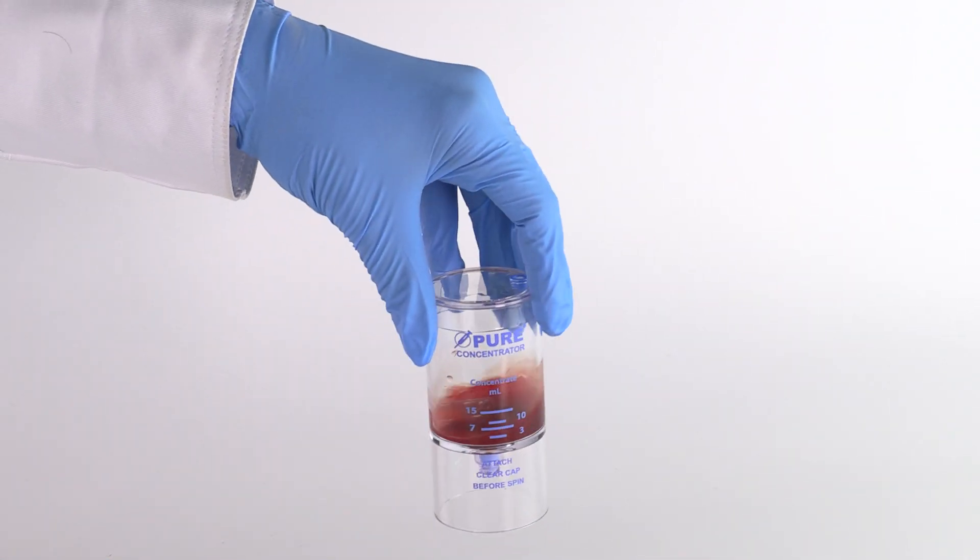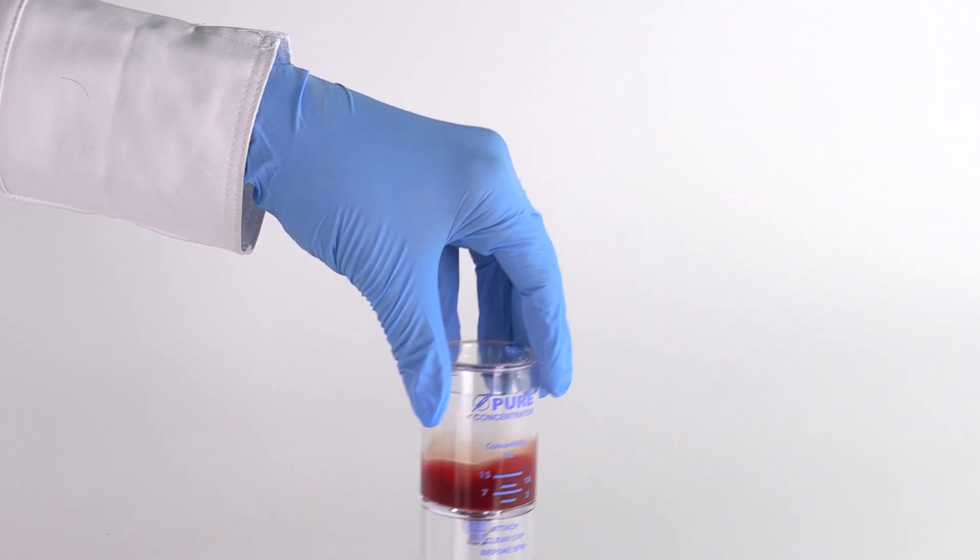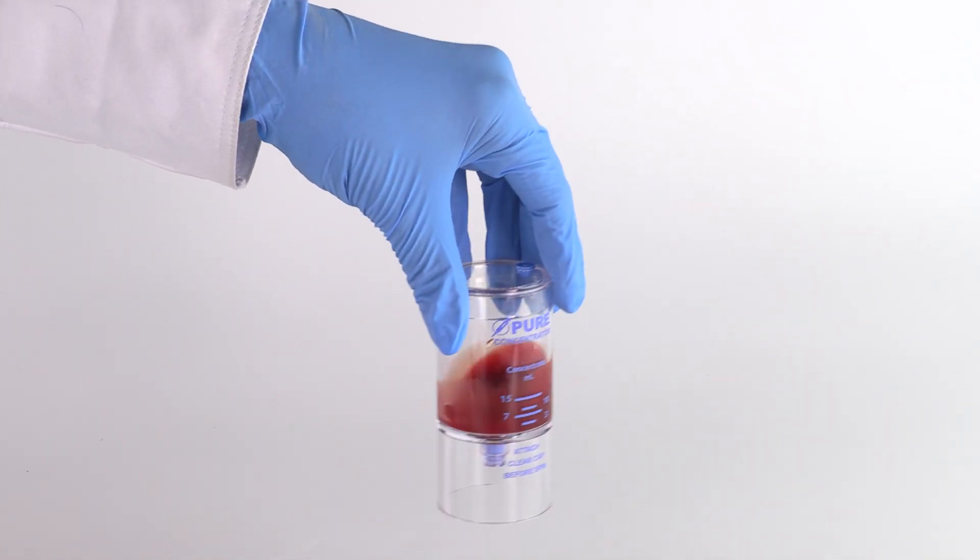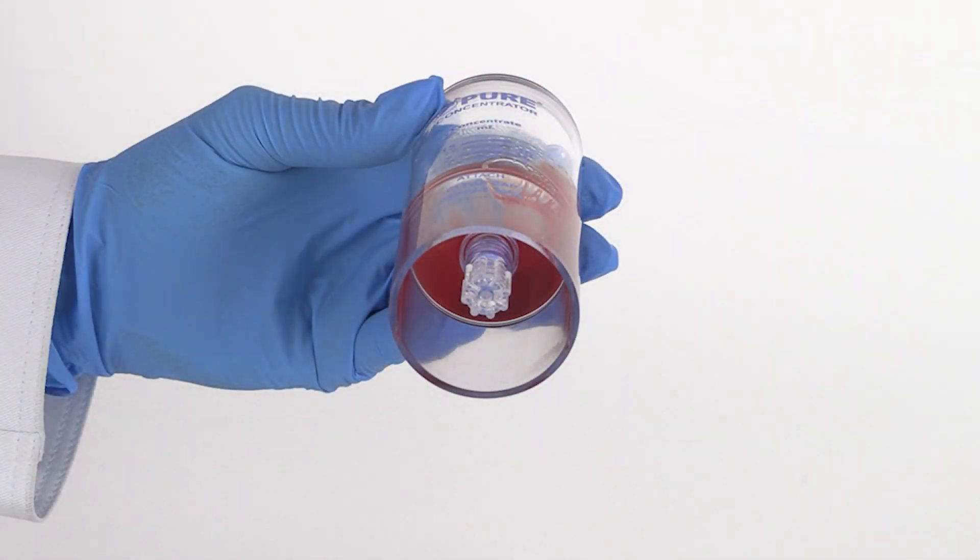Resuspend the cell concentrate back into the plasma by rocking and swirling the device back and forth. Do this until all of the concentrate has been resuspended into the plasma and is no longer visible at the bottom of the device.